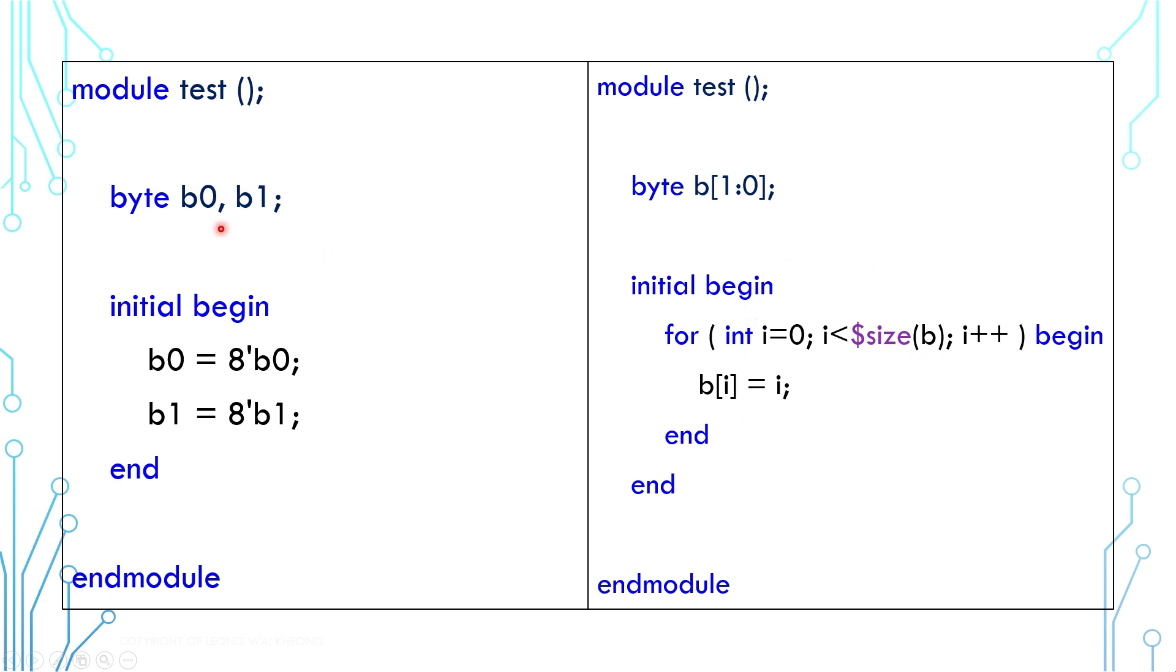Imagine that you need 10 bytes instead of 2. For the code on the left, you will need to add 8 more variables, and then you need to modify the initial block accordingly. But for the code on the right, you only need to modify the size of the array. Even better, if you use parameter on the array, the whole code becomes truly configurable and scalable.